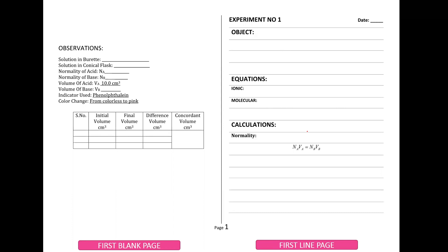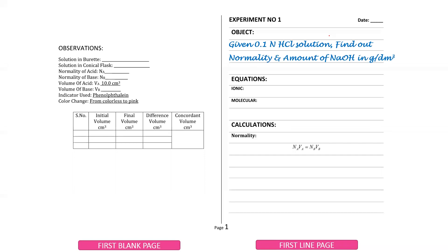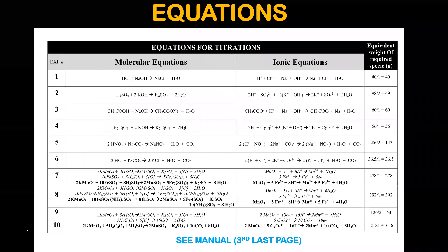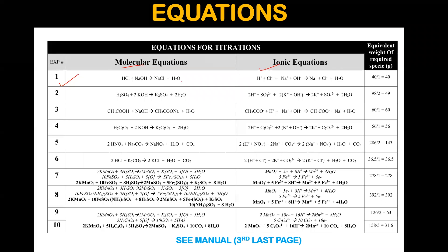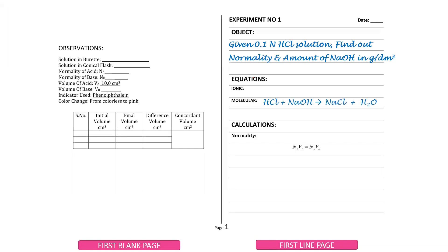The object you will find in the index — you will find experiment number 1 with the object written there. Copy the object into your journal. You will also find the equation in the manual. On the last page you will see the equation in the third section, including the molecular and ionic equations. Write the object in the first column, then draw the line and write the equation.